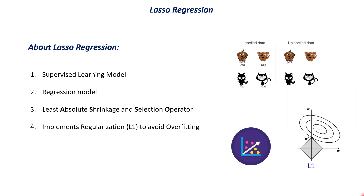Let me give you a quick recap of what we covered in the intuition and math video of lasso regression. Lasso regression is a supervised learning model where we train with a labeled dataset, whereas in unsupervised learning we train with unlabeled data. Supervised learning can be classified into two types: classification and regression. When you are predicting the class or type of a data point, that is a classification problem. When predicting a continuous numerical value — like a person's salary — that is a regression problem.